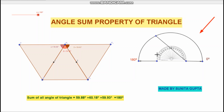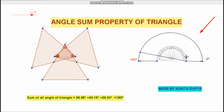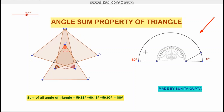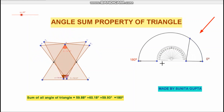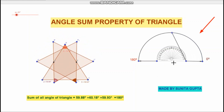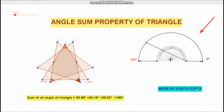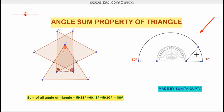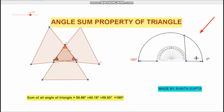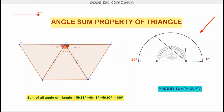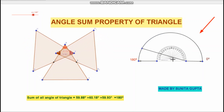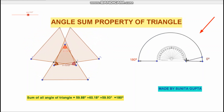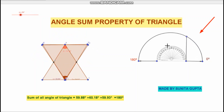If you see this figure with animation, this ray moves from 0 degrees to 180 degrees. This means that the angle formed on a straight line at any point by the linear pair property is 180 degrees. At any point on the line, the angle is 180 degrees.